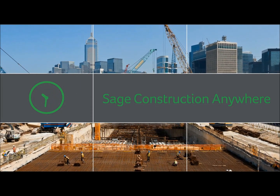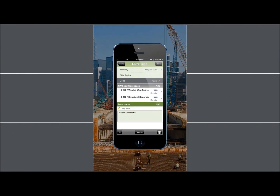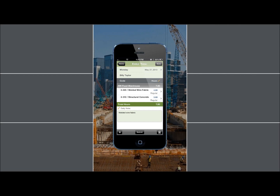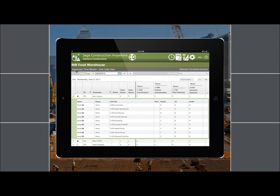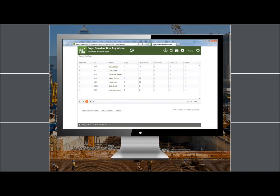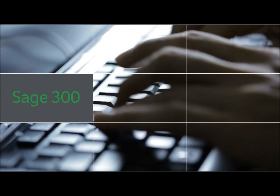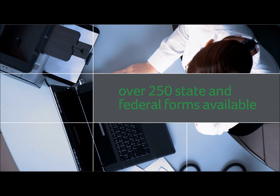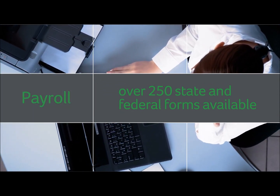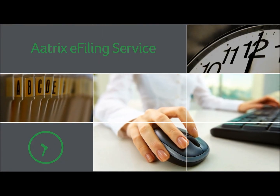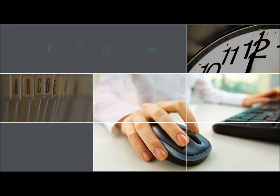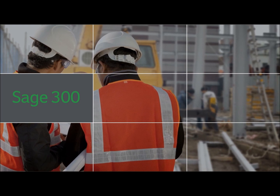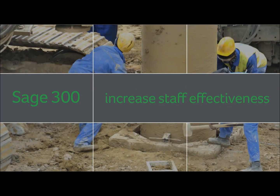With Sage Construction Anywhere, chasing down employees to get their hours, deciphering handwriting, or manually entering time for them is a thing of the past. Field personnel can now enter and approve time quickly and easily on their smartphones or mobile devices. Payroll administrators can then accept the time and use it within Sage 300 payroll, increasing accuracy and dramatically reducing payroll processing time. Sage 300 also has over 70 customizable human resource forms available, making it easy to bring on new hires, process terminations, and handle any number of HR needs. When it comes to filing payroll tax, more than 250 state and federal forms are available and are populated for you directly from payroll. You can save even more time by using Sage 300's built-in integration to the ATRIX e-filing service.